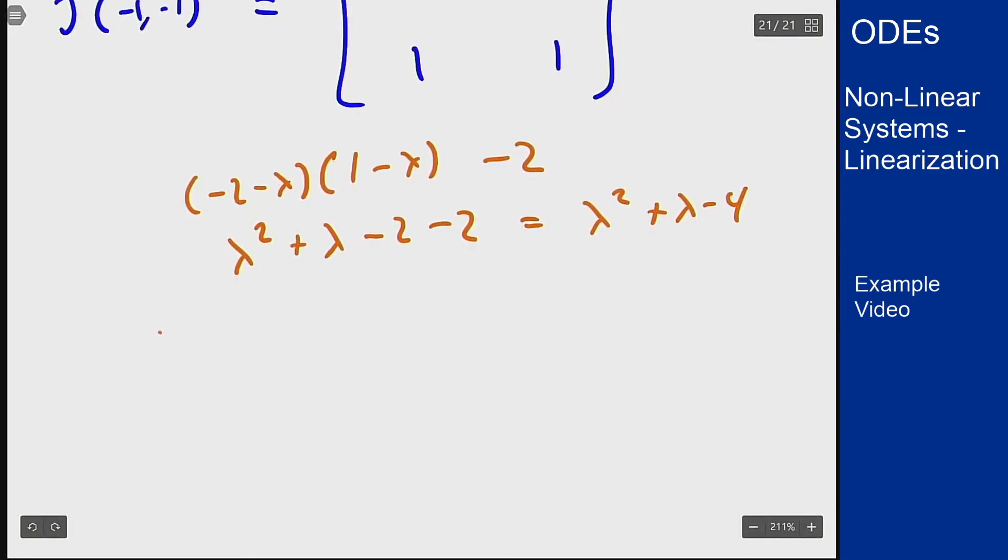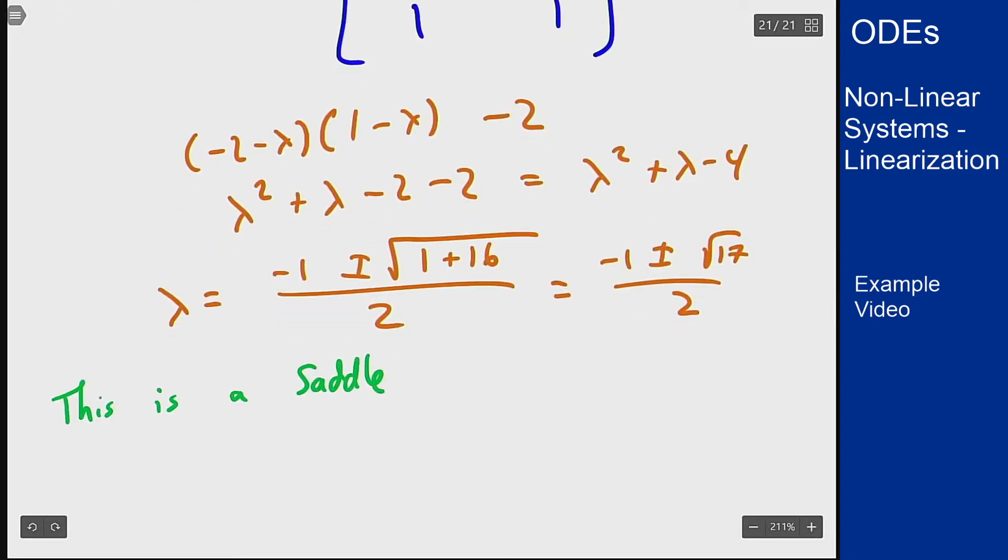Using the quadratic formula we see that lambda should be -1 plus or minus the square root of b squared is 1 minus 4ac is plus 16 over 2 or -1 plus or minus the square root of 17 over 2. Those aren't nice numbers but one is positive one is negative because of this plus minus sign. So that means that this will be a saddle and so the nonlinear system also behaves like a saddle there.